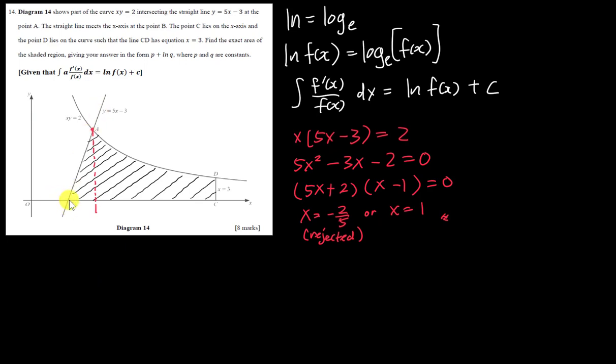The next coordinate I want to find is point B, which is the x-intercept. The x-intercept of this line basically means the y will equal to 0. So I just need to make y = 0 = 5x minus 3, then x will be 3 over 5. I got another coordinate 3 over 5 here, and this one is 3 already given.